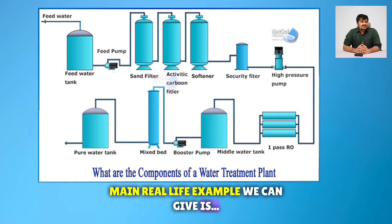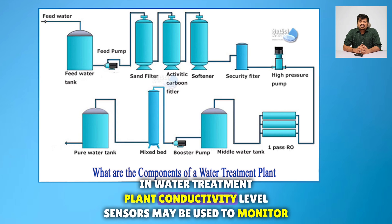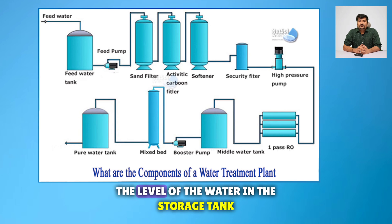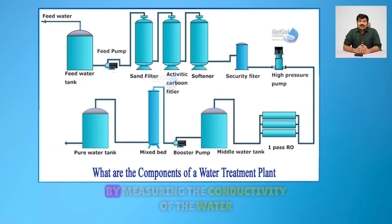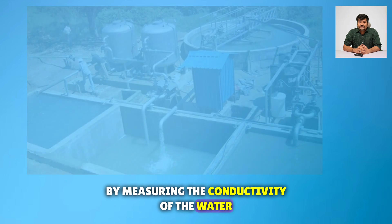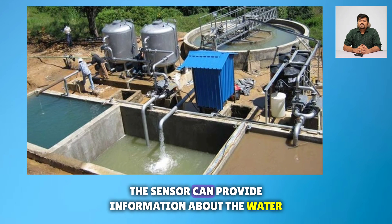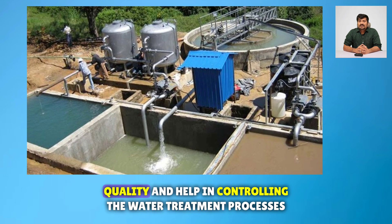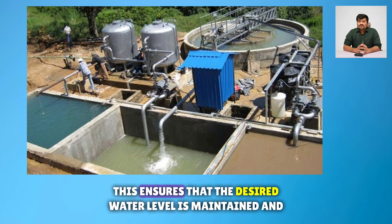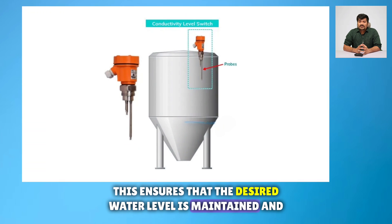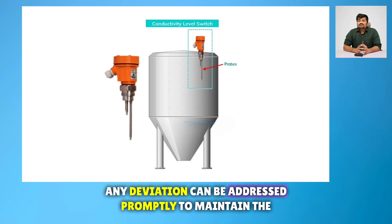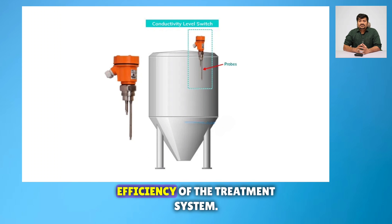A real-life example is in a water treatment plant, where conductivity level sensors may be used to monitor the level of water in a storage tank. By measuring the conductivity of the water, the sensor can provide information about water quality and help control water treatment processes. This ensures the desired water level is maintained and any deviation can be addressed promptly to maintain the efficiency of the treatment system.